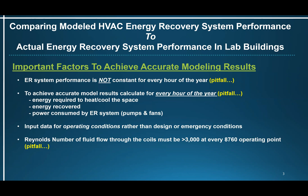Important factors to achieve accurate modeling results. Energy recovery system performance is not constant for every hour of the year. Most commercial models calculate the system performance using a constant efficiency value for all 8760 hours of the year. But in actuality, the system efficiency changes as outside air temperature and humidity change and as building operating conditions change, such as air volumes, supply air temperatures, exhaust air temperatures, etc. So energy recovery system performance needs to be calculated and input for every hour of the year.